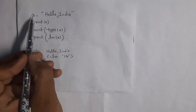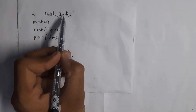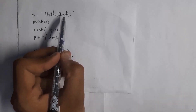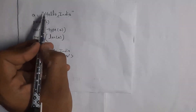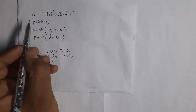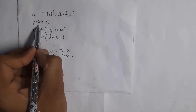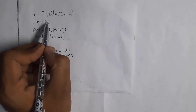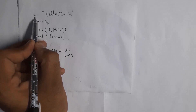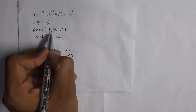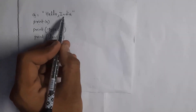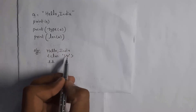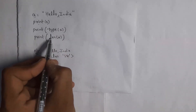Here I written a equal to 'hello, India', where a is the variable name and 'hello, India' is the string. After that I written print a, where the print function is used to generate output. So whatever data is present inside variable a will be generated as output — I will get output 'hello, India'. And similarly I written print type(a), where the type function is used to display the data type. Since hello India is a string, I will get output class str.